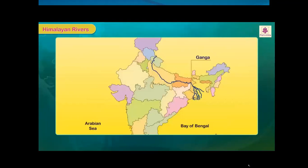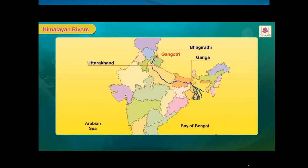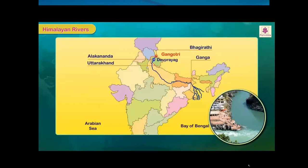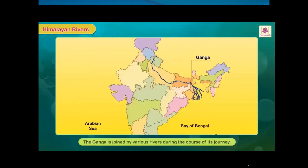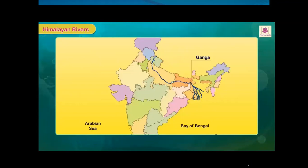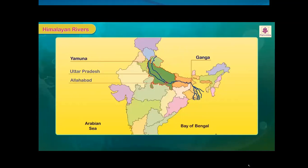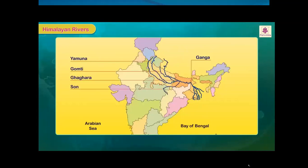The Ganga originates in the Gangotri Glacier in Uttarakhand where it is known as Bhagirathi. The Bhagirathi joins the Alaknanda at Devprayag, and from there onwards it is known as Ganga. The Ganga flows through Uttarakhand, Uttar Pradesh, Bihar and West Bengal before reaching the Bay of Bengal. The most notable tributary joining it is the Yamuna at Allahabad. Other tributaries of the Ganga are Gomti, Ghagara, Son, Gandak and Kosi.